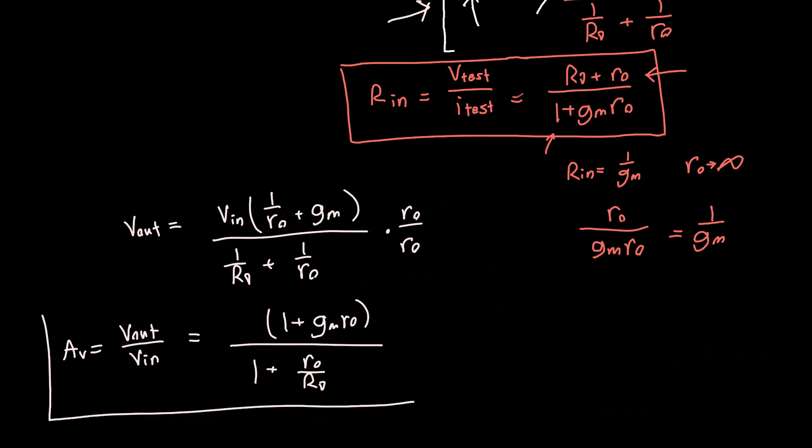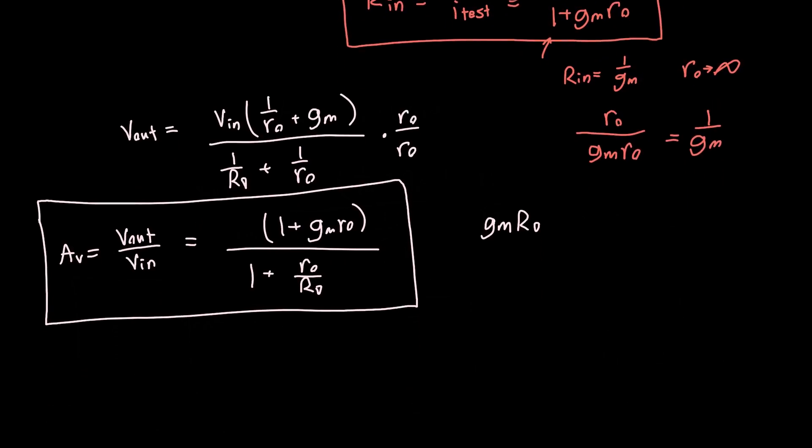Now, this is interesting. How does this compare to the previous answer we got? Because it looks pretty different. Our previous answer was GM RD when we neglected RO. We would expect to get the same answer when RO becomes infinity because that's just the same thing as neglecting RO. So, RO is infinity then we can neglect this 1 and we can neglect this 1, because RO over RD is going to be much greater than 1 and GM RO is going to be much greater than 1, and we get GM RO divided by RO over RD, or the ROs cancel and we get the answer GM RD.